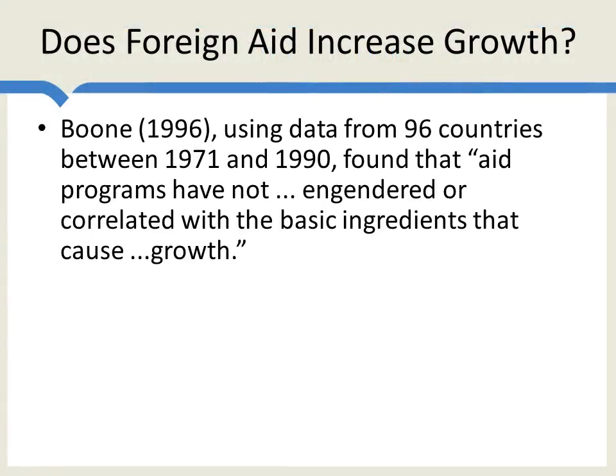That's the basic story. I want to talk about some of the recent econometric literature on aid and growth. The modern literature really begins with Boone, who, using data from 96 countries over a period of about 20 years, found that aid didn't increase investment. That is, you couldn't even find a connection between aid and the things which cause growth, such as investment.